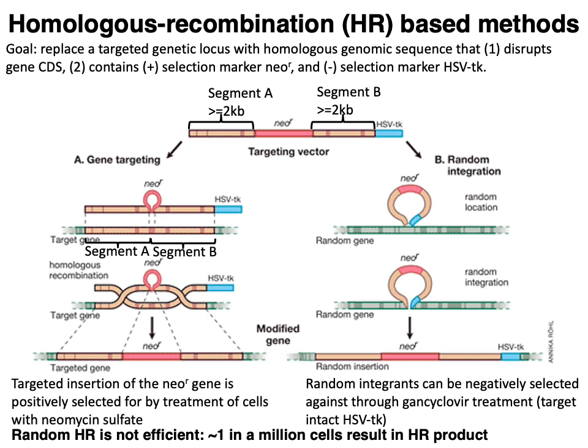It's also common to apply negative selection through HSVTK (HSV thymidine kinase). The idea is to prevent random integration of your targeting vector into the genome. If random integration occurs, you tend to have an intact HSVTK gene, so when you apply drugs like ganciclovir, those compounds inhibit DNA synthesis — but only after being phosphorylated by HSVTK. However, it's worth noting that even with positive and negative selection, you can still have random integrants if HSVTK is inactivated through other means like partial deletions.